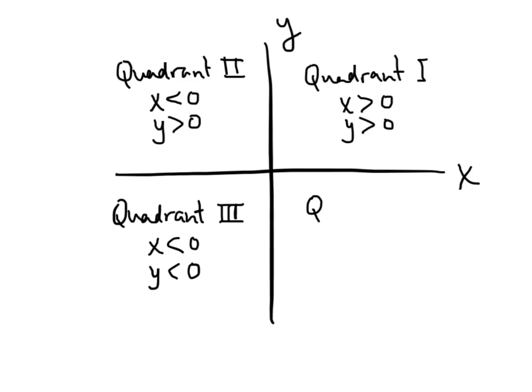Finally, quadrant 4 is down here in the lower right. That's where x is positive, but y is negative. This just gives us a convenient way to talk about where points live in our plane. We'll often refer to these quadrants as we move forward in the course.